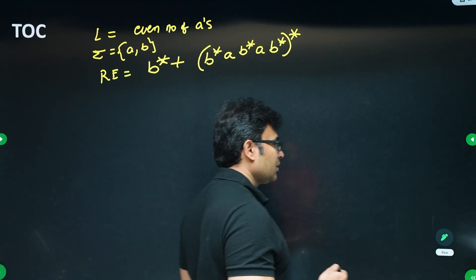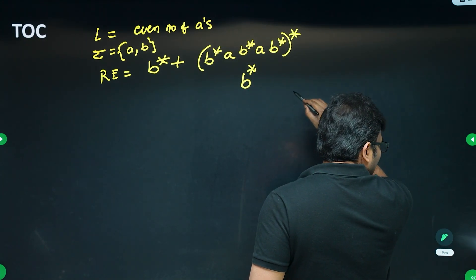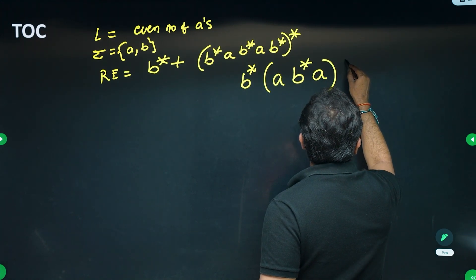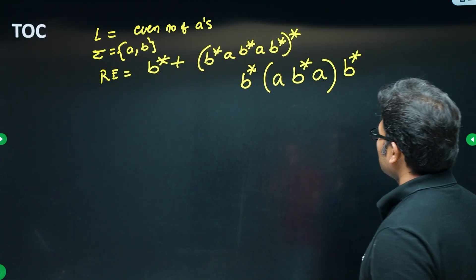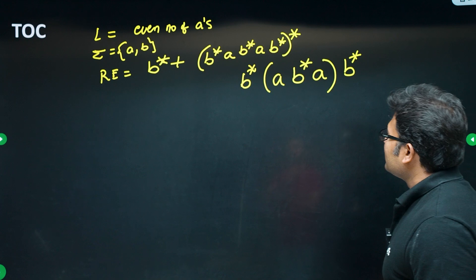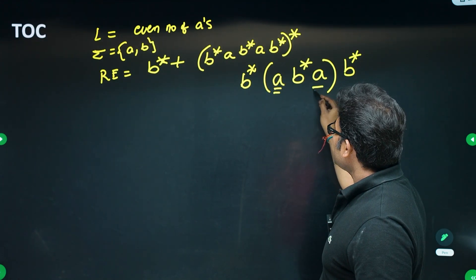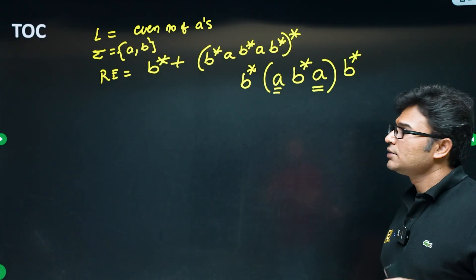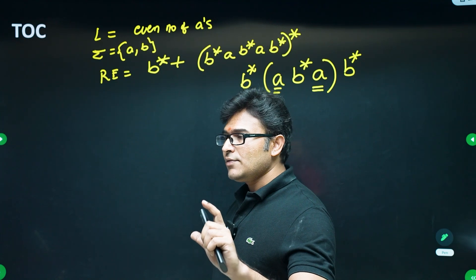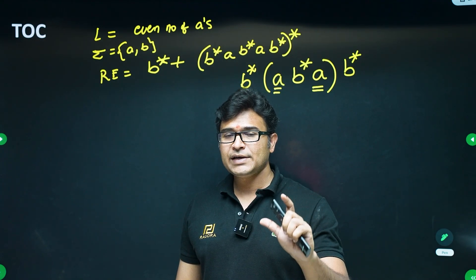A student asked: why not b* followed by ab* a followed by b*? Why is it not the answer for even number of a's? It is not the answer because — this is a very important property — always check whether the language contains epsilon. If the regular expression does not generate epsilon but epsilon is in the language, you can rule it out.